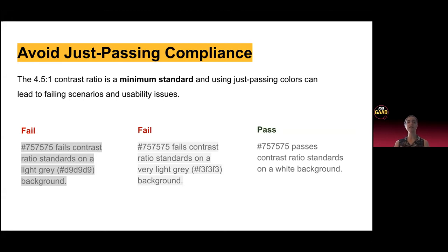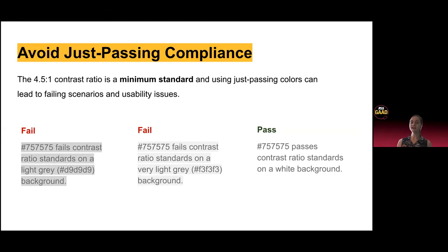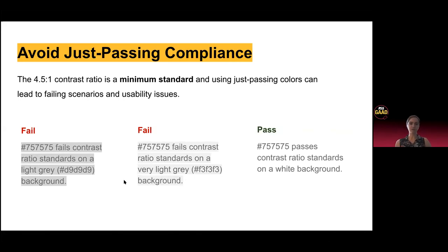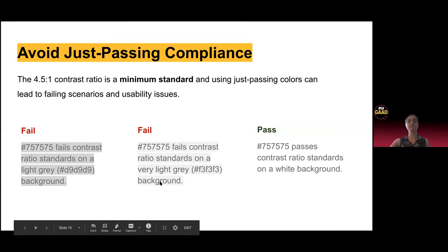So to go beyond that — avoid just passing compliance. The 4.5 to 1 is a minimum standard. What happens a lot is we'll use medium, middle grays to de-emphasize text. The hex code 757575 is a common example. On a white background this passes, but if you use a very light gray background, this will fail contrast ratio standards. So it's really important to keep in mind that even though something passes in one instance, it doesn't mean it'll pass in all. If you use those middle gray tones, it's easy to accidentally fail those standards.